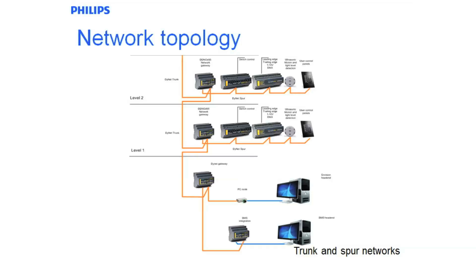Also worth noting that if the network does go down for any reason, all of the devices will just stay in the last state that they were in. That means you can't change the current state, but most of the devices do have local override, so in that sort of emergency you can override the system. The trunk goes down to a management PC which would be running either D-Lite 3 Map View or in the future Vision Manager.